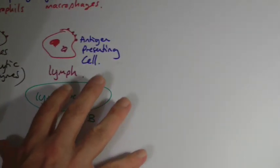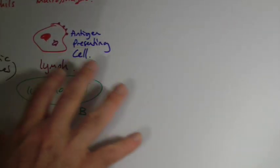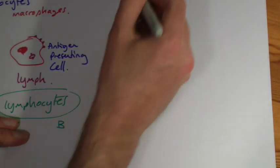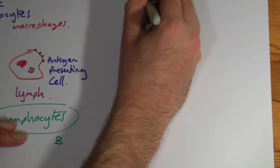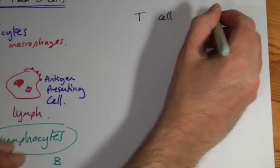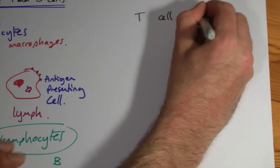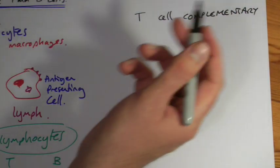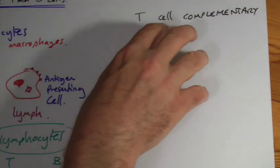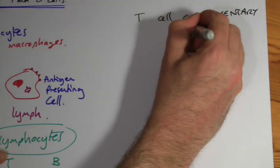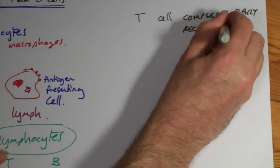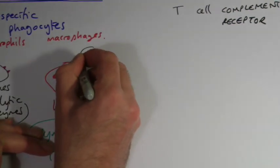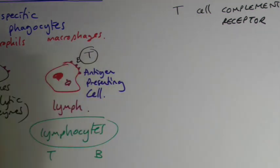Now, once it gets there, it will locate, and here's where it gets a little bit fuzzy, because they've simplified it in your books. Think of it like this. What it's going to do is locate a T cell with the correct or complementary receptor. We know about complementary from enzymes and from antibodies. A T cell with a complementary receptor. So on the surface of our T cell, there will be a receptor that is complementary to the antigen.